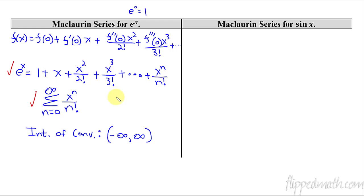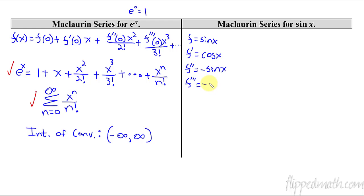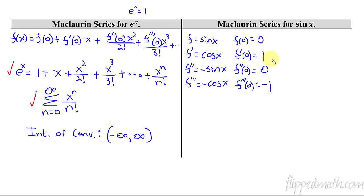Now let's figure out what sine x is going to be. To do this one, we need to write a list. What is f? f is sine. The derivative of f is cosine. Second derivative of f is negative sine. Third derivative, negative cosine. And if we took the fourth derivative, we'd be back to sine — it repeats this order over and over again. Since we're doing a Maclaurin, let's figure out f of zero, f prime of zero, and so forth. The pattern is: zero, one, zero, negative one, zero, one, zero, negative one. We're going to use the Maclaurin series formula and plug in these values to come up with the Maclaurin series for sine x.